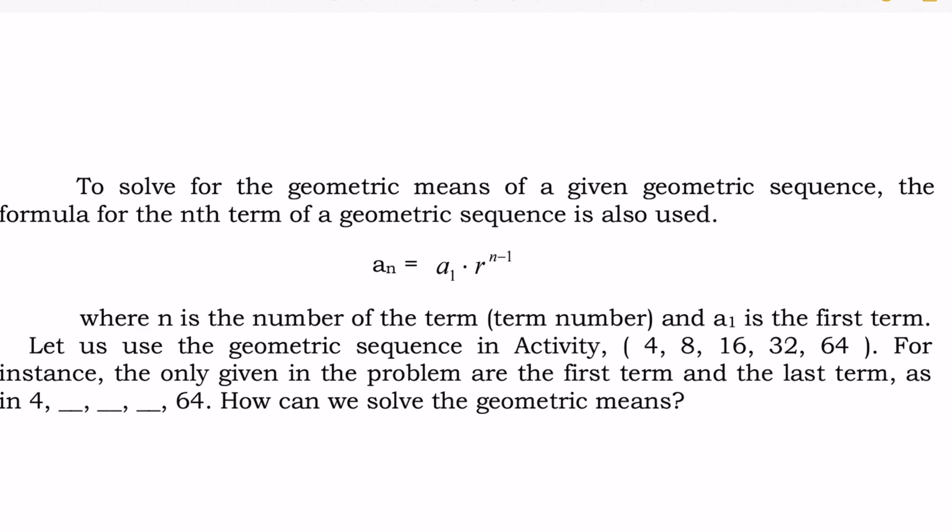Let us use the geometric sequence in activity 4: 4, 8, 16, 32, and 64. For instance, the only given in the problem are the first term and the last term, as in 4, missing the 3 geometric means, 64. How can we solve the geometric means?